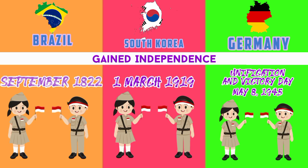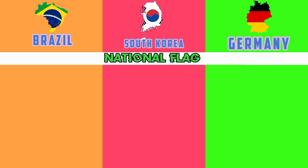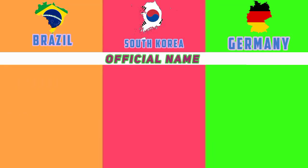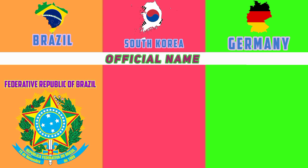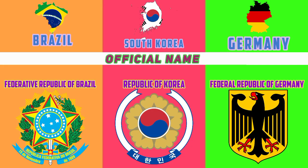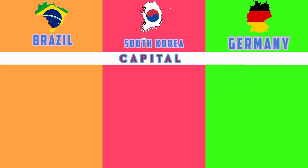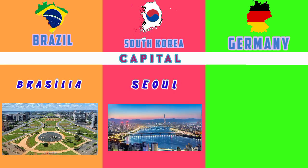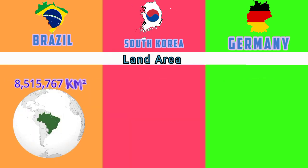Germany's unification and victory day is the 8th of May 1945. National flag. Official names: Federative Republic of Brazil, Republic of Korea, Federal Republic of Germany. Capitals: Brasília, Seoul, Berlin.